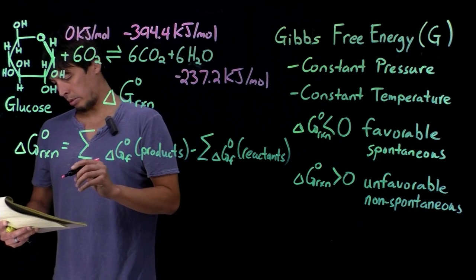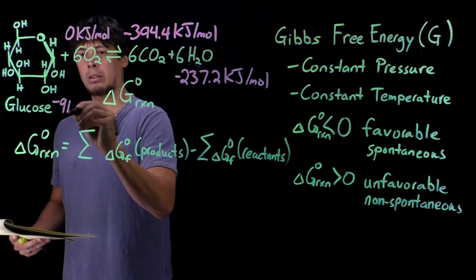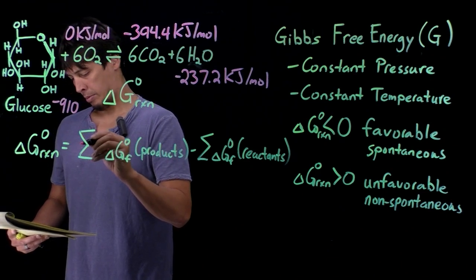And then for glucose, it's negative 910.6 kilojoules per mole.